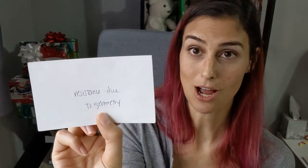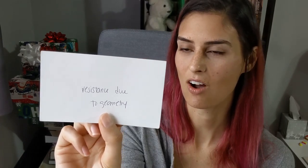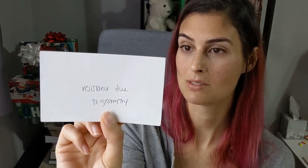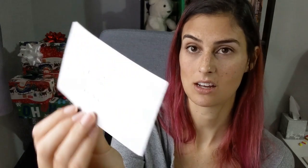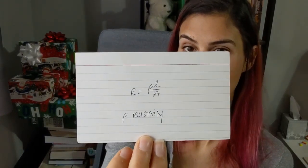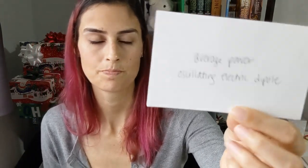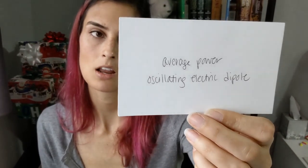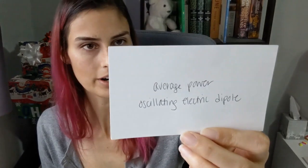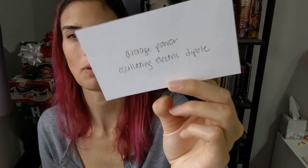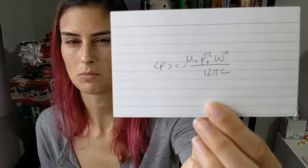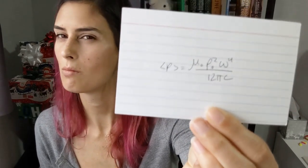Resistance due to geometry: R equals rho times L over A, where rho is the resistivity of the substance — you get resistance based on the shape of the object. The average power of an oscillating electric dipole: P average equals mu naught p naught squared omega to the fourth over 12 pi C. There are a lot of these random equations in electromagnetism.